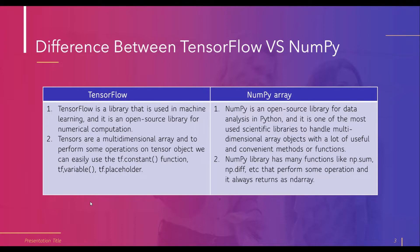In tensors, there are multi-dimensional arrays. To perform operations on a tensor we use the tf.constant function, tf.variable function, and tf.placeholder function. In the case of NumPy arrays, we use np.sum and np.dif for basic operations, and it will always return an n-dimensional array.